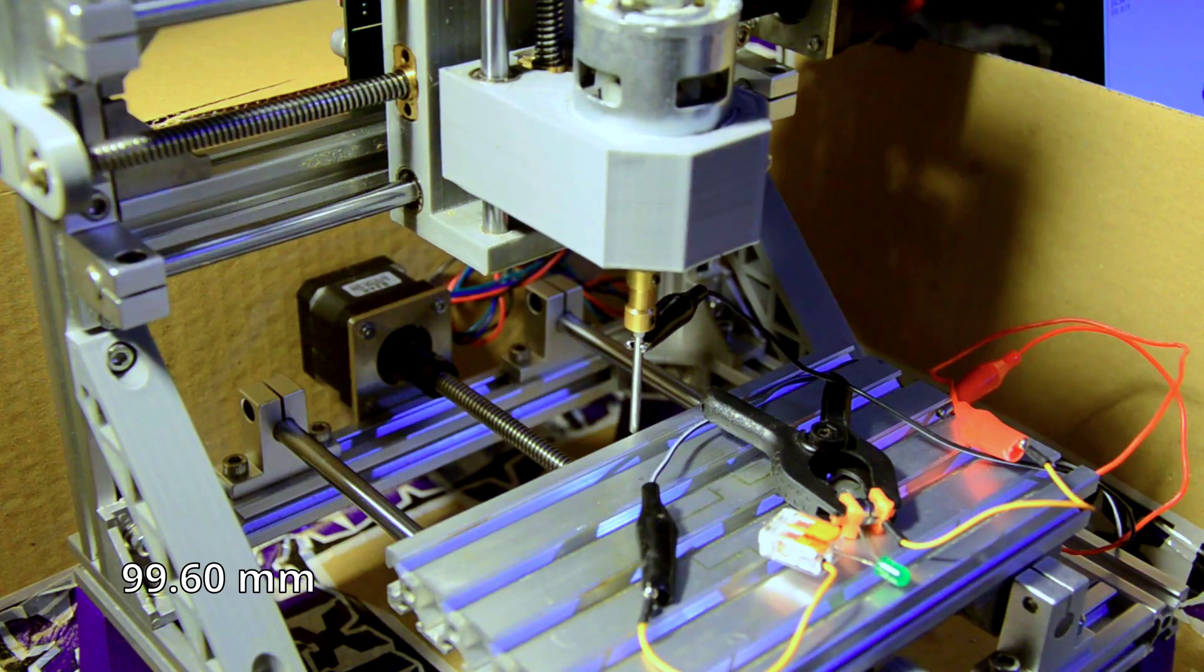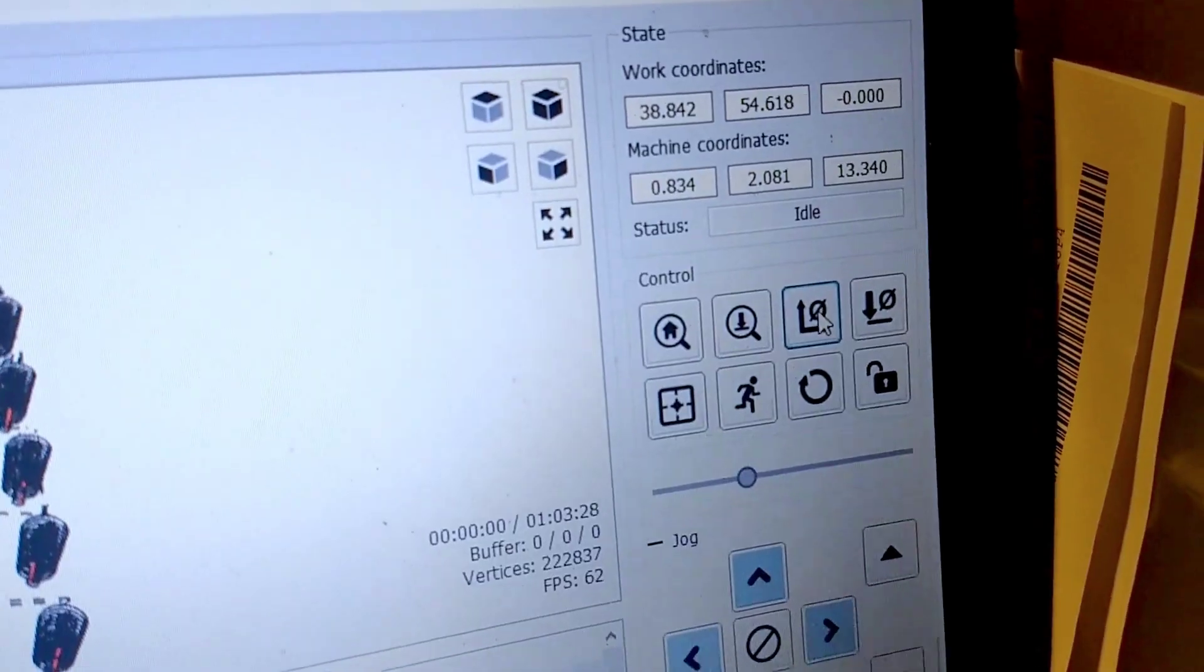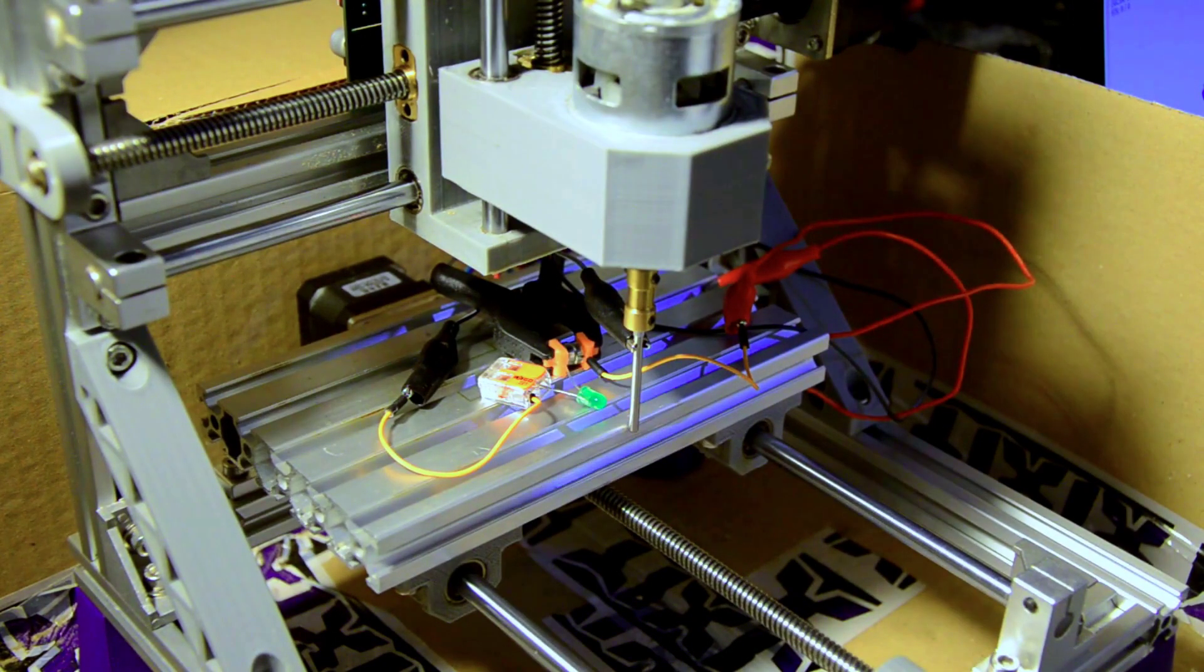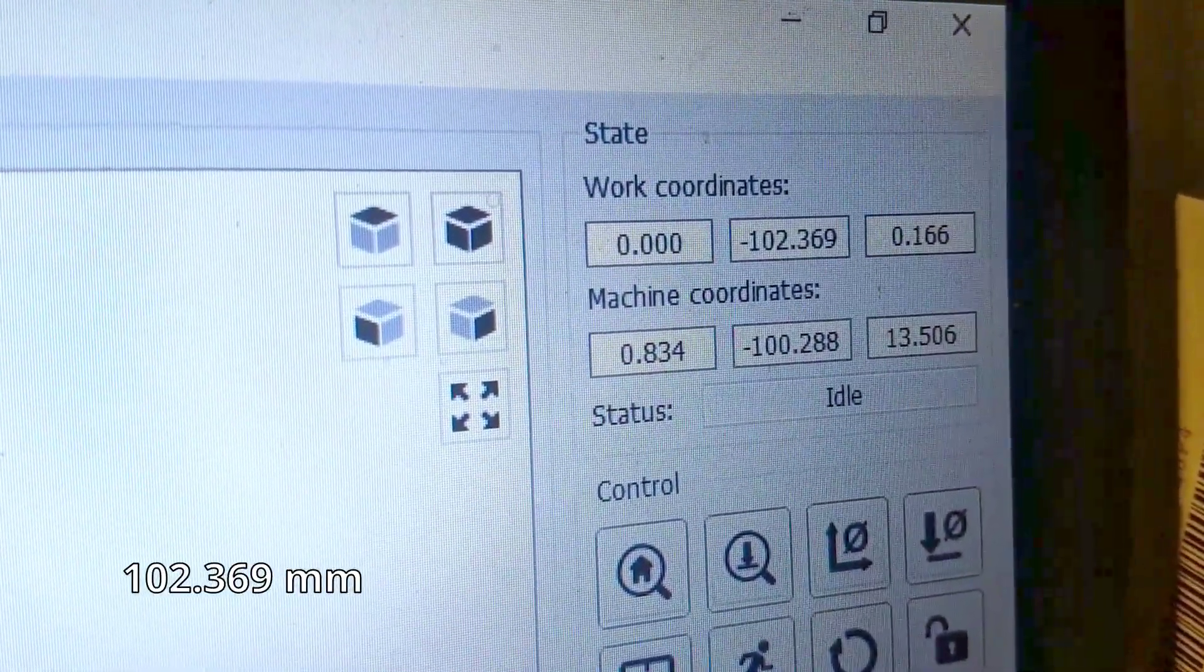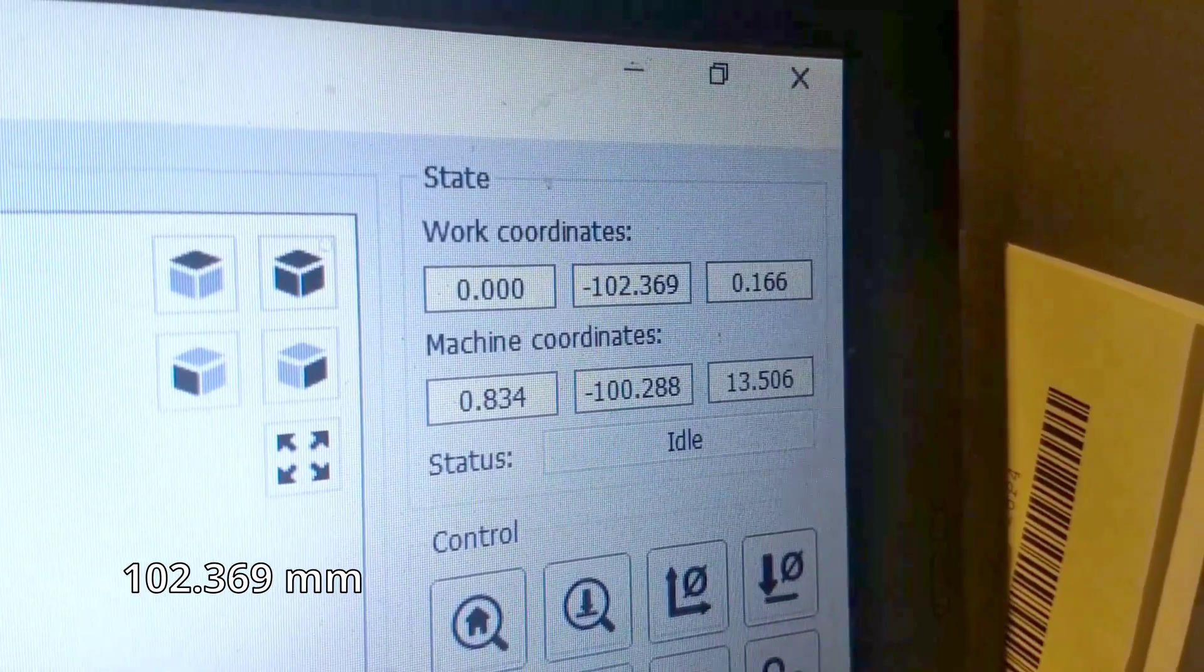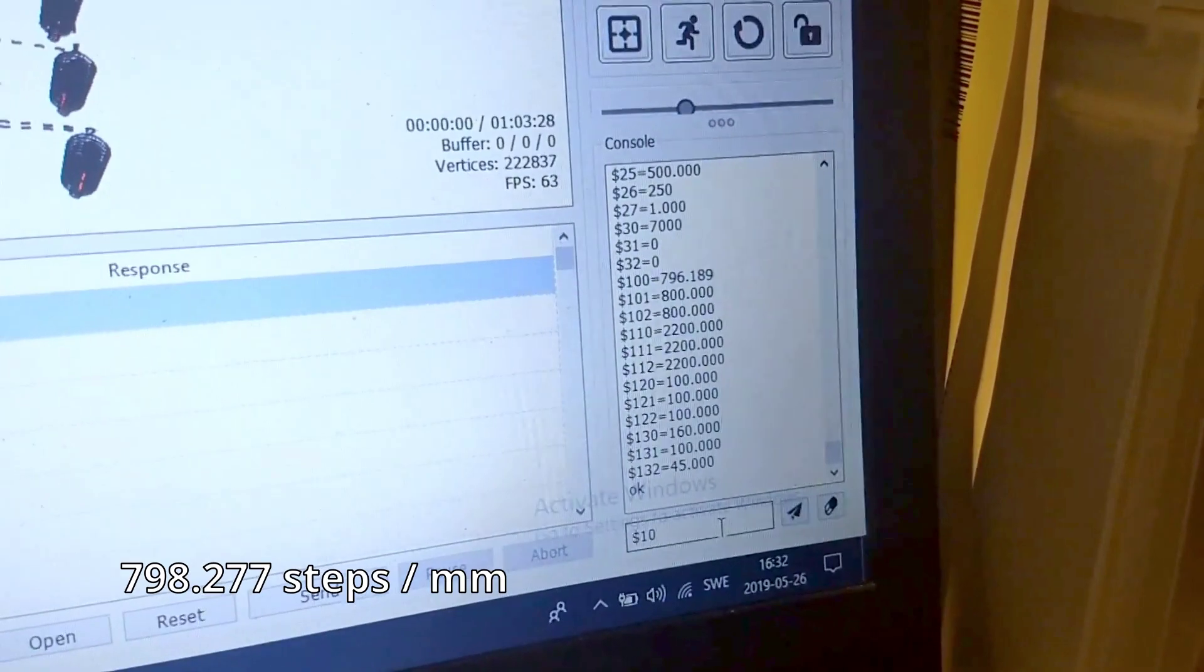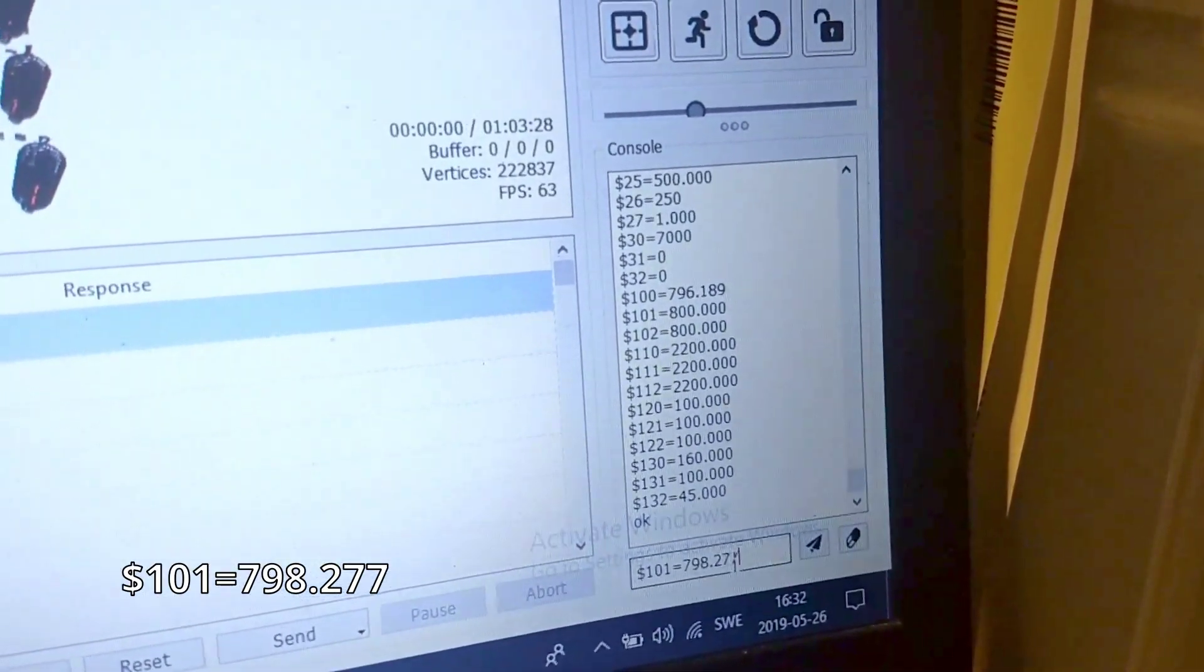Now we can position the tool on one side with very high precision. Zero the axis, and do the same thing on the other side. We'll enter the values in our handy tool, so we don't mess up on the math. Now we can configure the axis with the calibrated value, and do the same measurement again to check our error.